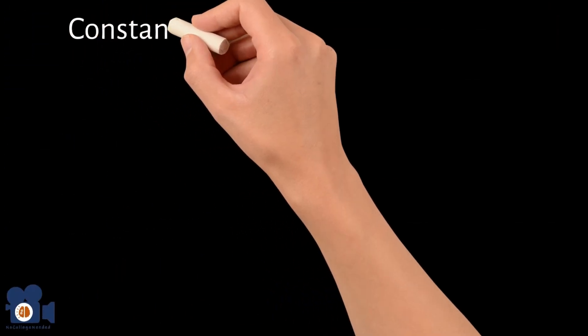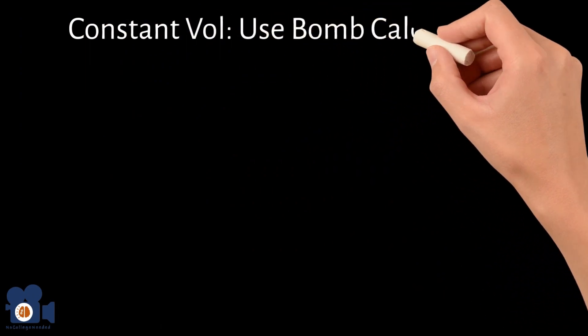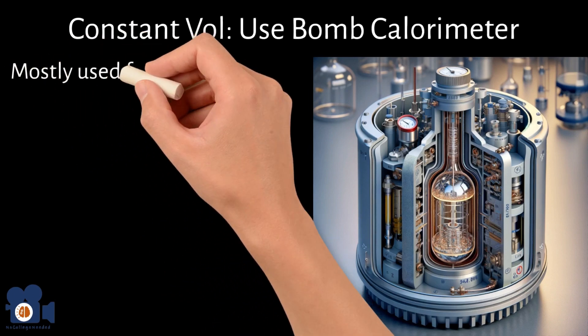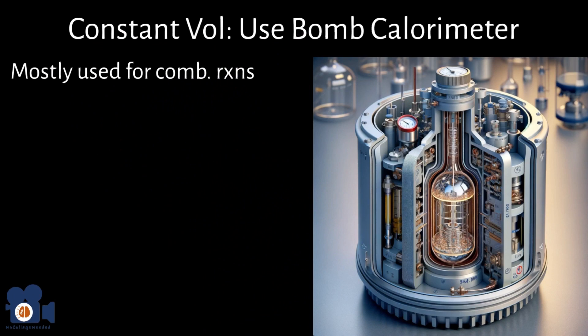For constant volume heat change calculations, we use bomb calorimeter, which is similar to the coffee cup example, but think of it as we took that cup, sealed it, and placed it in a water-filled sealed container, so pressure is constant. Bomb calorimetry is most often used for combustion reactions, and the water still absorbs the heat and is measured to calculate the change in heat.